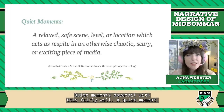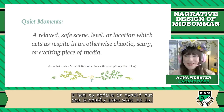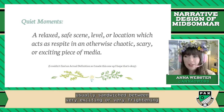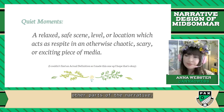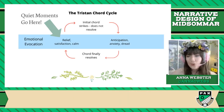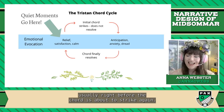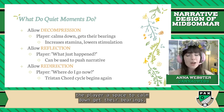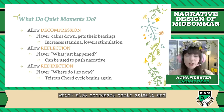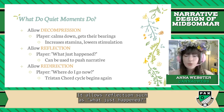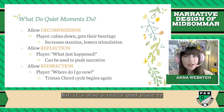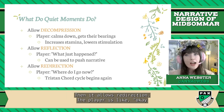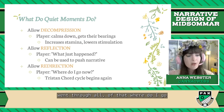Quiet moments dovetail with this fairly well. A quiet moment is a relaxed, safe location or scene, usually sandwiched between very exciting or frightening other parts of the narrative. Within the Tristan Chord cycle, quiet moments go right at the secondary evocation, usually right before the chord is about to strike again. What do quiet moments do? They allow for decompression — giving the player a space to calm down and get their bearings, which also decreases their stimuli and increases their stamina for moving forward. It allows reflection and is a great place to push narrative, as the player is trying to identify what's going on. Then it allows redirection — the player thinks 'okay, where do I go now?' — and you can begin the cycle again.